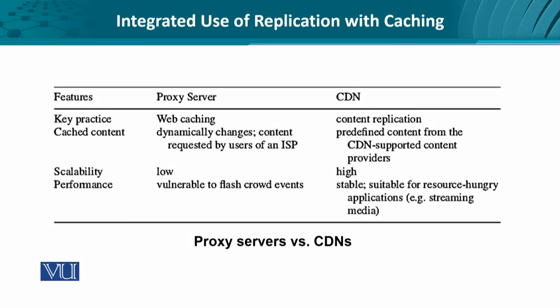This is a quick summary of some features compared against proxy servers and CDNs. The key practice in proxy servers is caching; in CDNs it is replication, marked by C and R. The cached content in proxy servers changes very frequently and is requested by users, for instance in an internet service provider. In CDNs, the content is predefined from CDN-supported content providers. Scalability is low in the first case and high in the second. In performance, proxy servers suffer from flash crowd events, whereas in CDNs it is fairly stable.